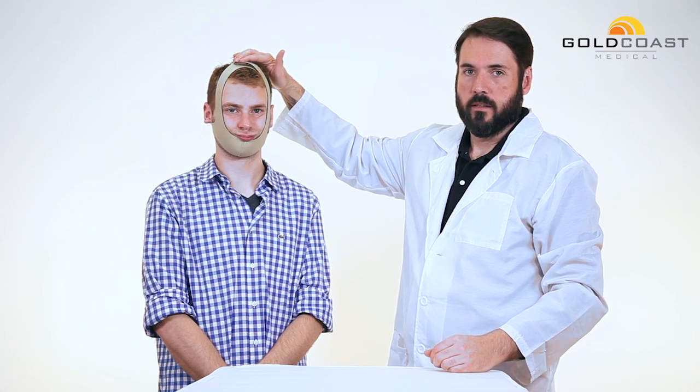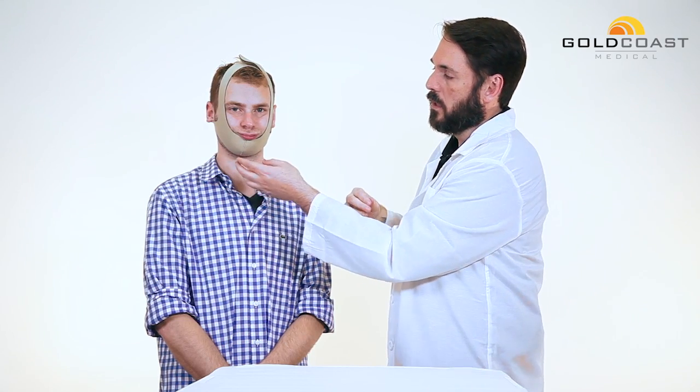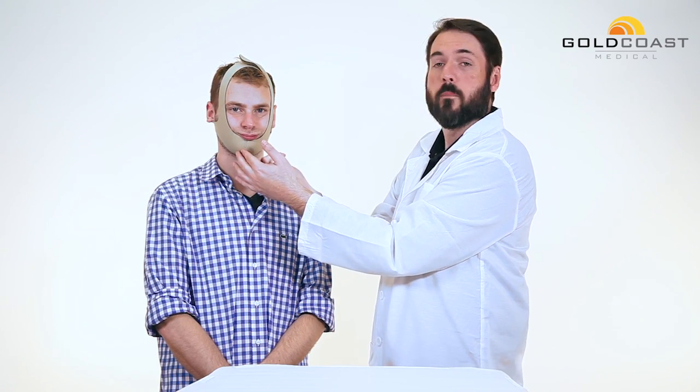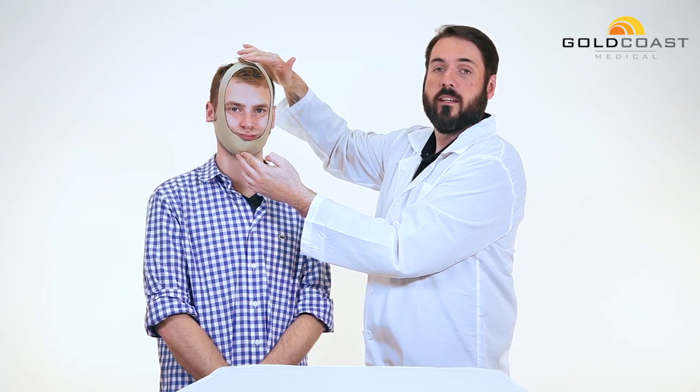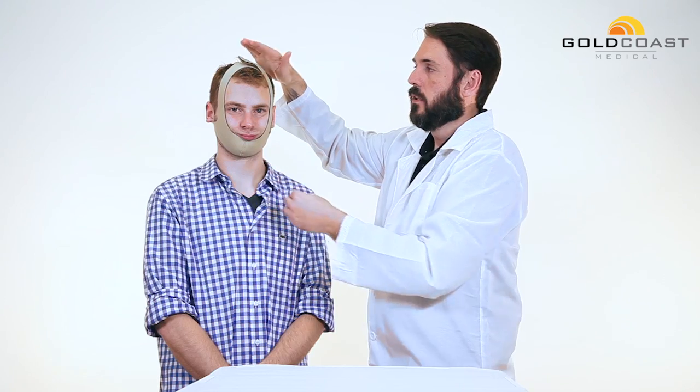You want to make sure there's two sizes in this particular chin strap. There's the standard which is what this is. There's also an extra large size. The way to determine which one you would need is you would want to measure from the middle of the bottom of your chin, up around by your ear and into the crown or the highest point on your head. Anything 14 inches or above, you're going to want to use an extra large size in this chin strap.